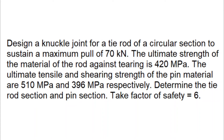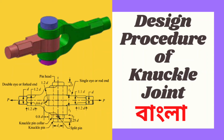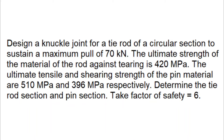Welcome to my channel. In this video, you will find a knuckle joint problem solved — the knuckle joint design procedure. We will design a knuckle joint for a tie rod of circular section to sustain a maximum pull of 70 kN. The ultimate strength of the rod material against tearing is 420 MPa. The ultimate tensile and shearing strength of the pin material are 510 MPa and 396 MPa respectively. Determine the tie rod section and pin section. Factor of safety = 6.